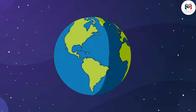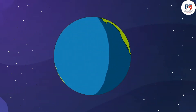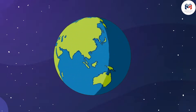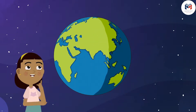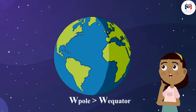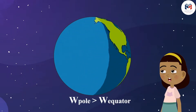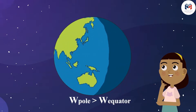Remember, we learned in the previous chapter that the value of acceleration due to gravity is more at poles than at the equator. Considering that, where do you think you will weigh more — at the North Pole or at the equator? Your weight will be more at the North Pole than at the equator, but keep in mind that the difference will be relatively small.